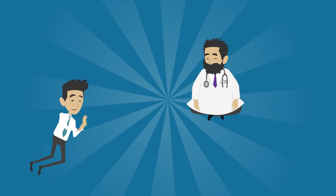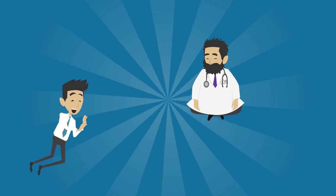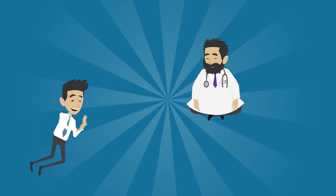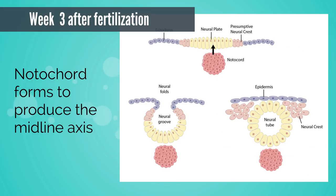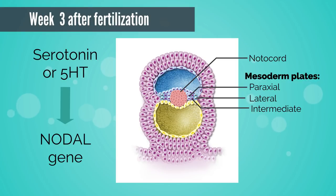I remember — week 3 is when the trilaminar germ disc develops. You are absolutely right. During week 3, the trilaminar germ disc develops. Gastrulation begins with the formation of a primitive streak and primitive node. The epiblast cells invaginate to form endoderm and mesoderm; those that do not migrate form the ectoderm. The notochord forms from the endoderm to produce the midline axis, or basis of the axial skeleton. The endodermal cells in the hypoblast express head-forming genes, and there is a cascade of genes and molecules to signal the formation of laterality of the mesoderm.